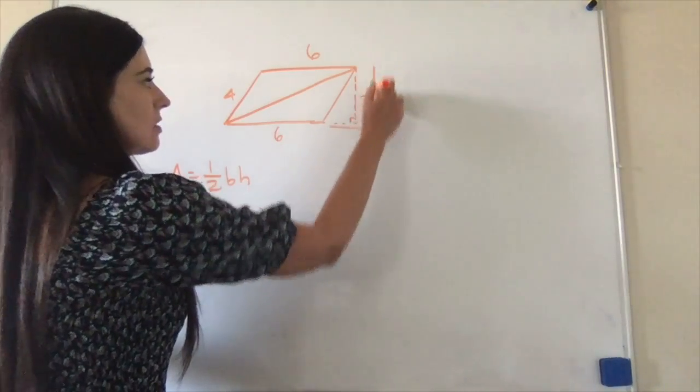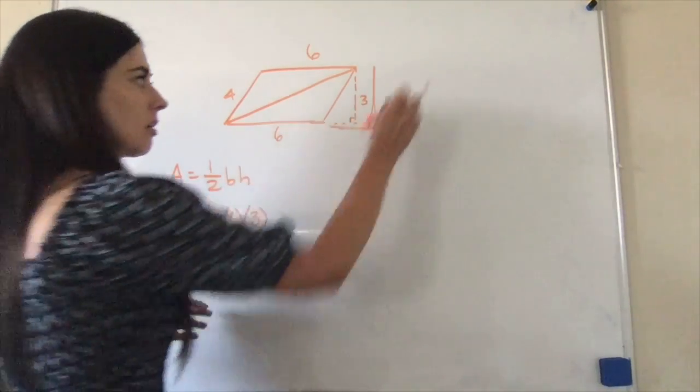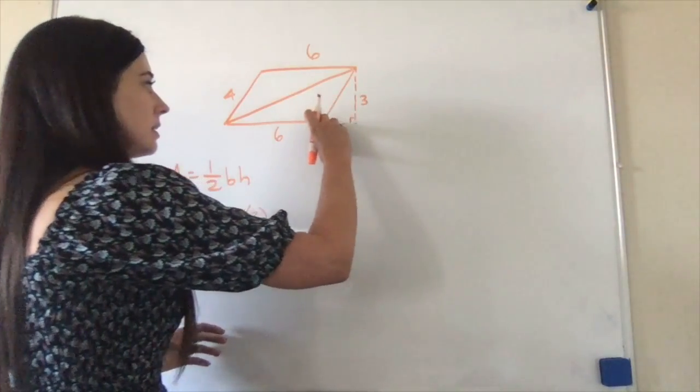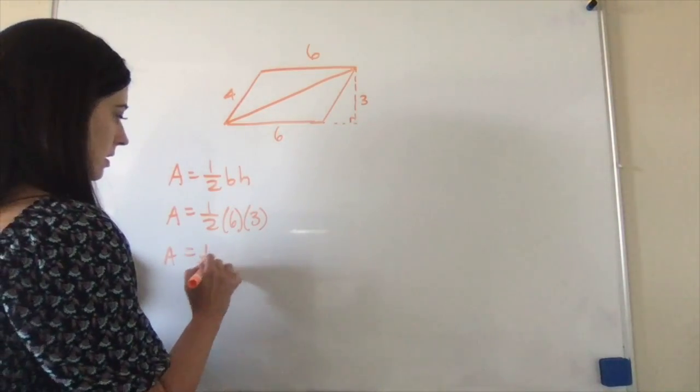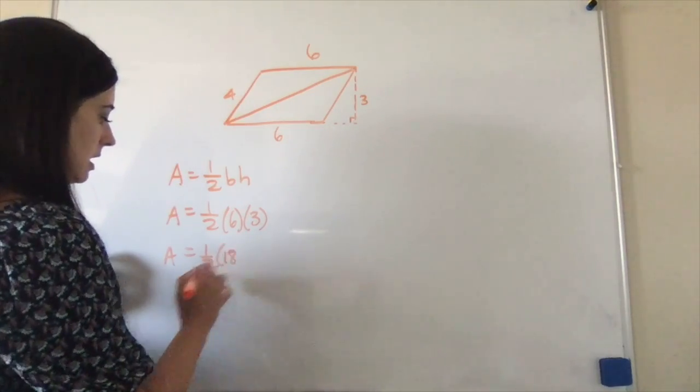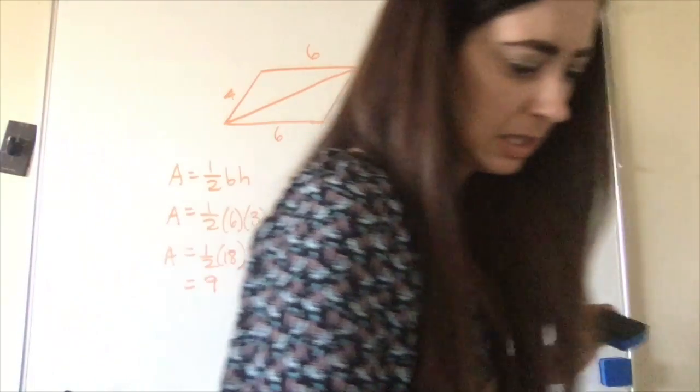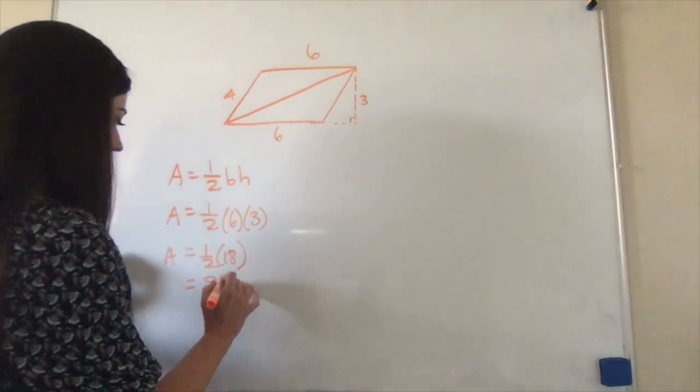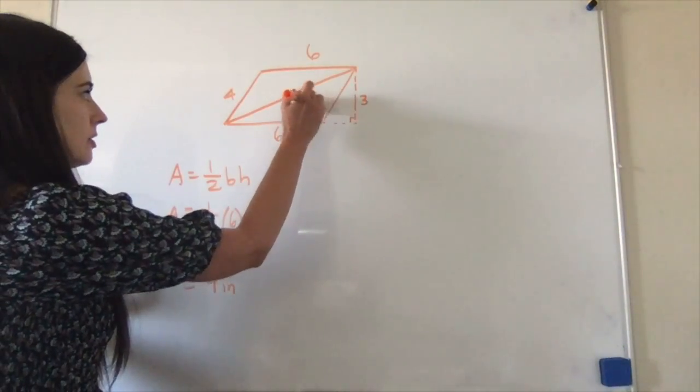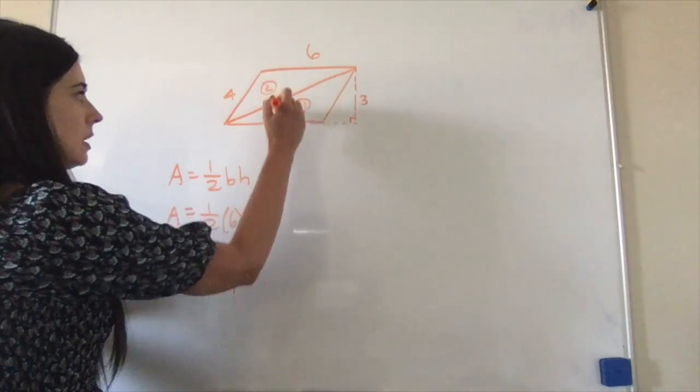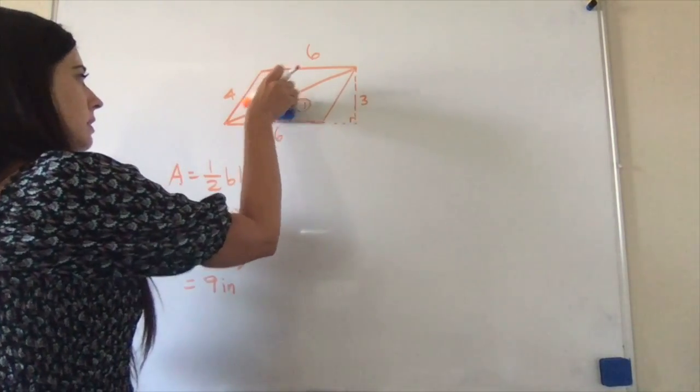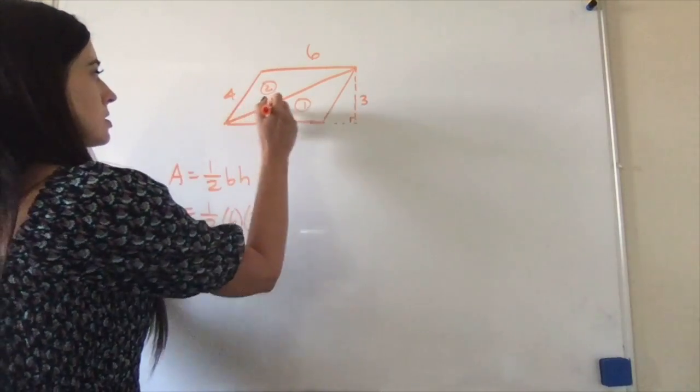Remember, height is found at a 90-degree angle there. So one-half, three times six is 18, equals nine, and this is in inches. Okay, so that's, for this is one, and this is two. We get nine inches squared.